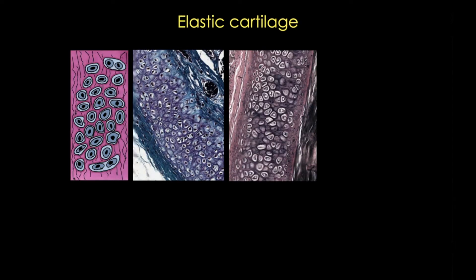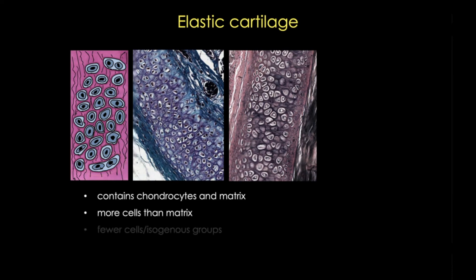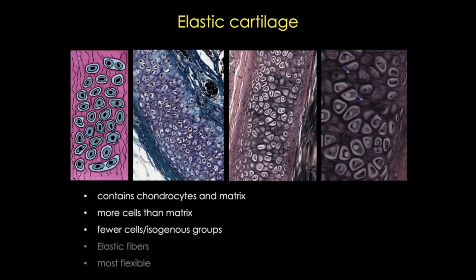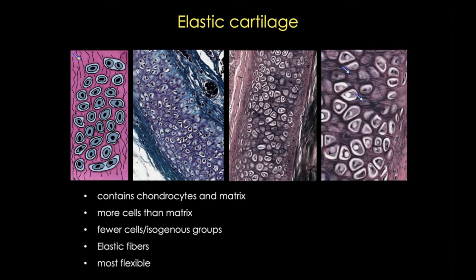Elastic cartilage also contains chondrocytes and matrix, but can be differentiated from hyaline in several ways. First, it has more cells than matrix. In fact, it has the highest number of chondrocytes of the three types, and while it does have isogenous groups, there are fewer cells per group than in hyaline cartilage. The color, as shown here, even in an H&E stain, is darker and almost duller than hyaline. But the most distinguishing feature is the presence of elastic fibers, which you can really see in this section stained with Verhoff stain, which colors those fibers black. Those fibers will also look like thin, kind of shiny threads that you can see even in an H&E stained section.